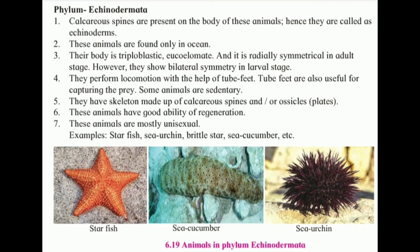Phylum Echinodermata: calcareous spines are present on the body of these animals, hence they are known as echinoderms. These animals are found only in the ocean. Their body is triploblastic, eucoelomate, and radially symmetrical in adult state. However, they show bilateral symmetry in larval states.